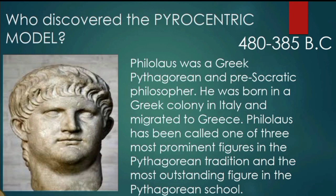Philolaus has been called one of the three most prominent figures in the Pythagorean tradition and the most outstanding figure in the Pythagorean school — of course, the Pythagorean tradition was founded by Pythagoras. Philolaus was a member of this group of philosophers and astronomers, and became notable for his pyrocentric model, which places fire — not the Earth or the Sun — at the center of the universe. This is somewhat similar to Copernicus's model, though of course we know Copernicus was correct.